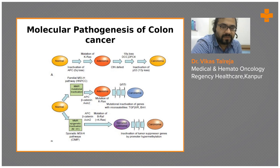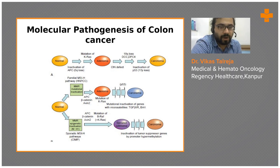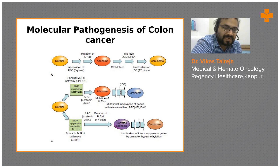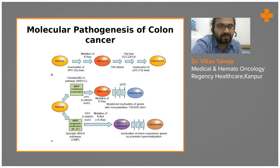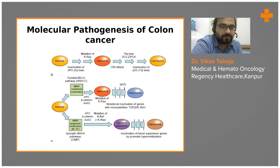The 18q loss, DPC4 loss, and further mutations lead to carcinoma. This follows the Knudson two-hit hypothesis: first there is a familial gene aberration, and then a somatic gene aberration, which leads to the accumulation of these genomic instabilities driving adenomas to become carcinomas.